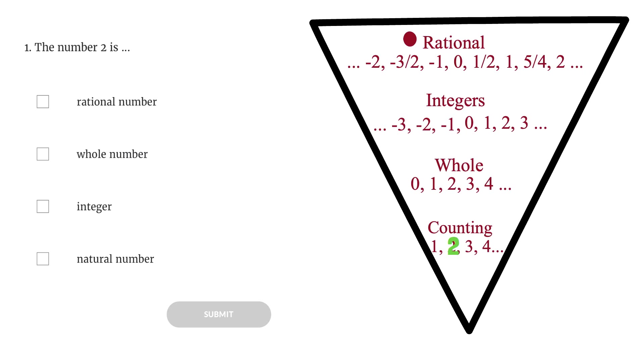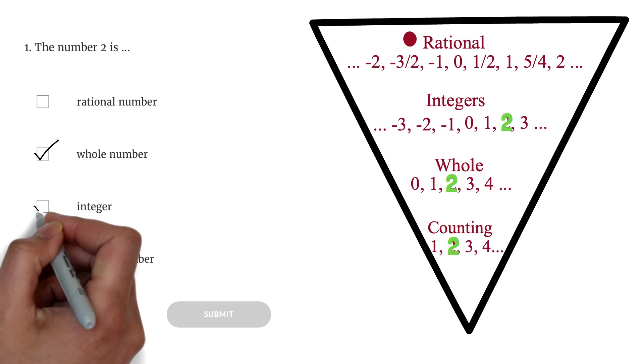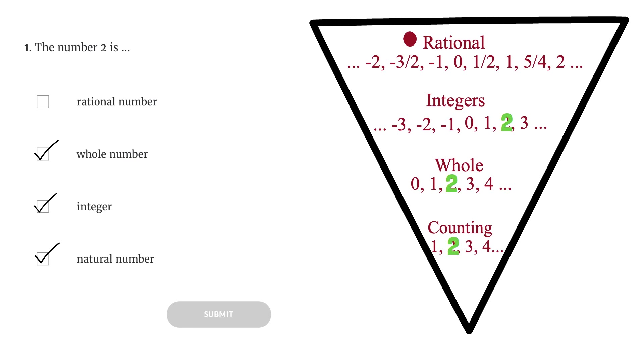For our question, we can say that 2 is a counting or natural number. Check. 2 is a whole number. Check. 2 is an integer. Check. And 2 is a rational number. Check. So we have our answer.